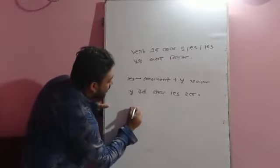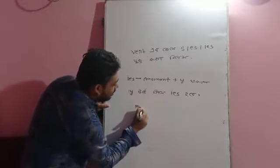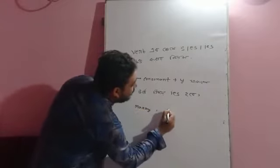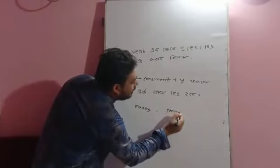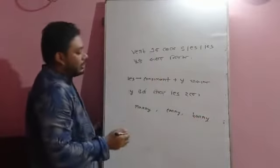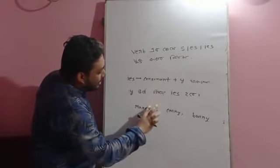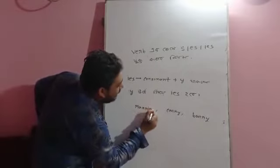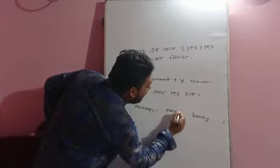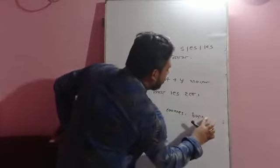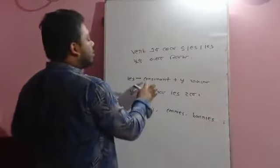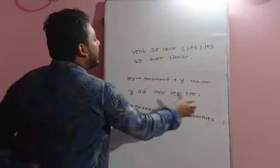Next, let me take some examples: marry, carry, Barry. Consonant plus Y - when there is consonant plus Y, the Y changes and becomes IES. Consonant plus Y means Y will change to IES.